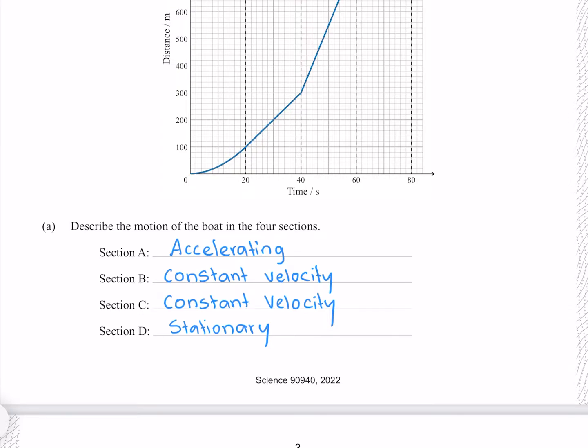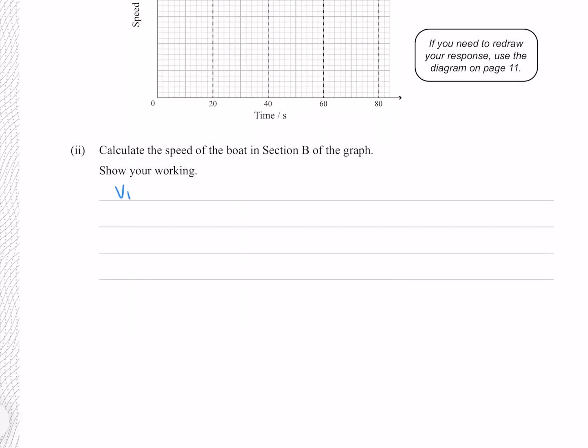We can find the speed by simply finding the slope of this line. As you might recall, slope is rise over run, and I can see that our rise is 200 meters and our run is 20 seconds. So our velocity in section B is going to be 200 divided by 20, which gives us 10 meters per second.